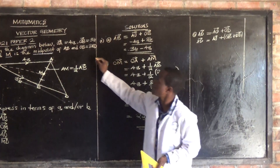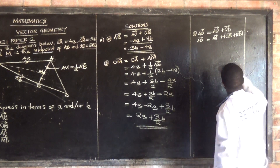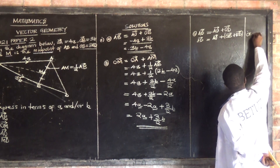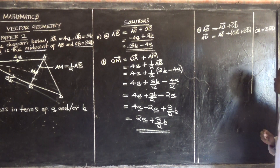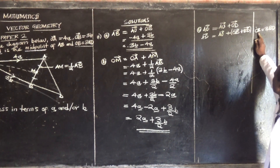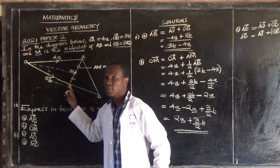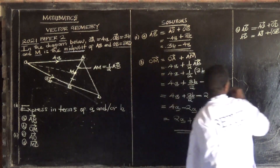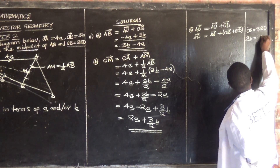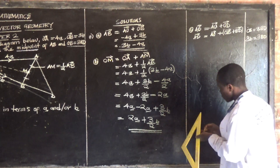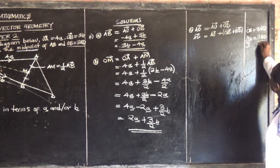What is going to help us find BD is the statement that OB is equal to 3BD. We want BD. Our OB is 3 vector b. So 3 vector b equals 3 BD. Divide both sides by 3.